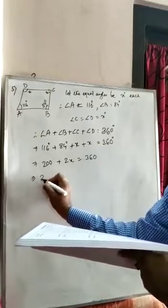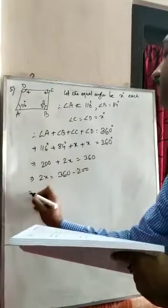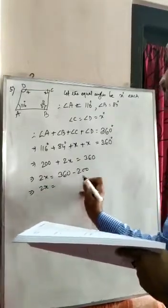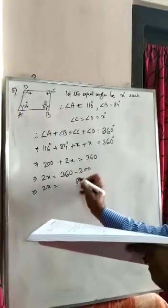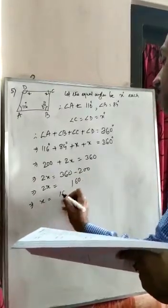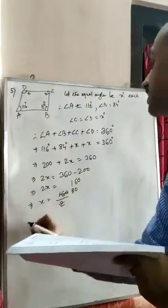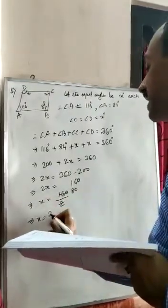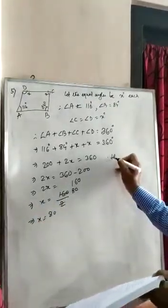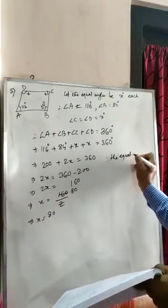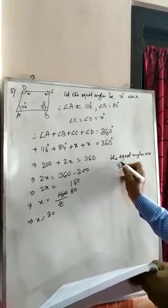So 2X = 360 − 200 = 160, therefore X = 160 ÷ 2 = 80. The equal angles are 80 degrees each.